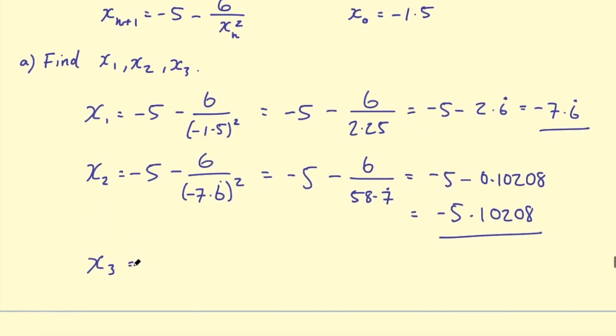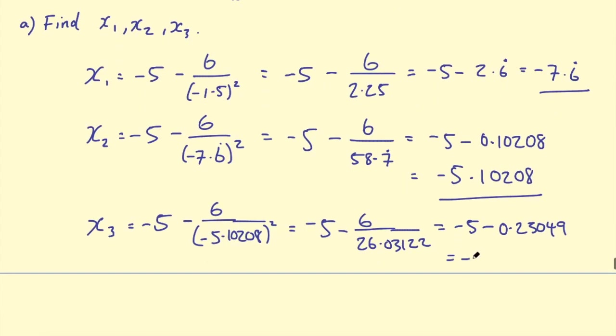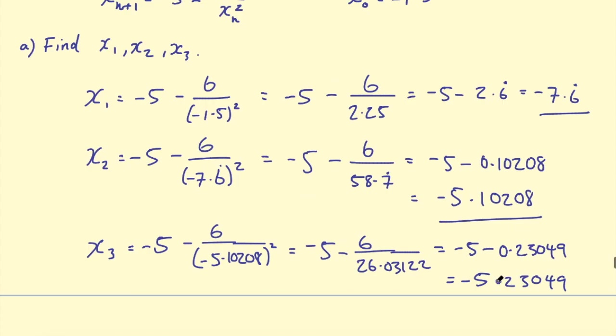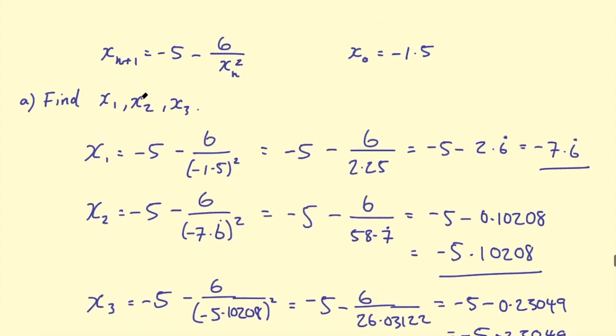And then we're looking for the last one, x_3. So again, we plug that back into the iterative formula. So we've got -6 over -5.10208 squared. We square that, and we get -5 - 6 over 26.03122. Then 6 divided by 26.03122 equals -5 - 0.23049 - again I've rounded that off. My final answer for the third term is -5.23049. I've got my first, second, and third terms using this formula.